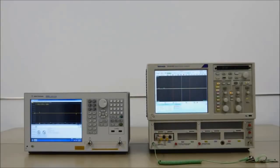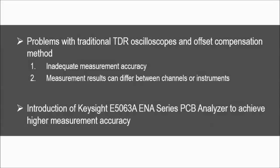TDR oscilloscopes with the offset compensation method have been used as a standard measurement solution for PCB impedance measurements. However, it becomes more difficult to achieve the measurement accuracy required for the latest digital standards. In this video, we will review the problems in PCB impedance measurements with traditional TDR oscilloscopes and the offset compensation method.